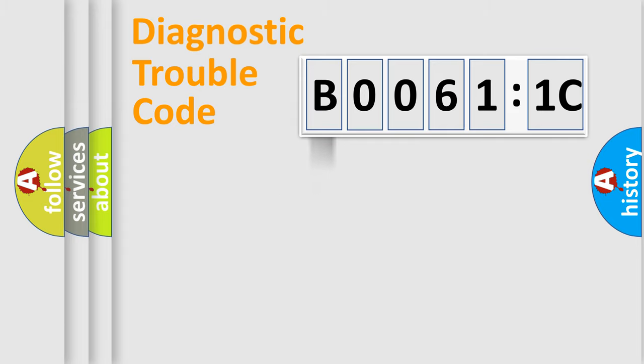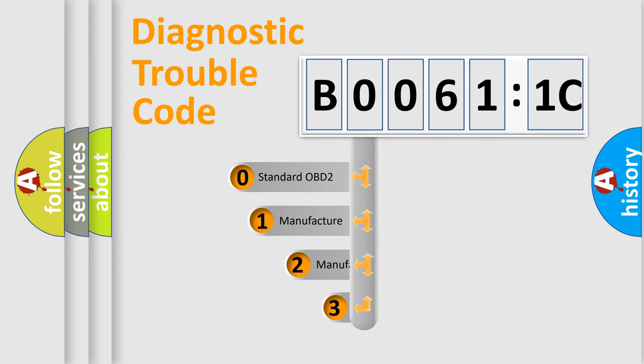Powertrain. Body. Chassis. Network. This distribution is defined in the first character code.